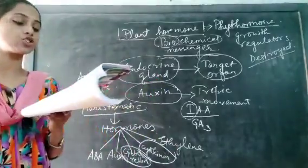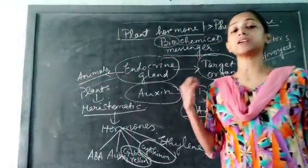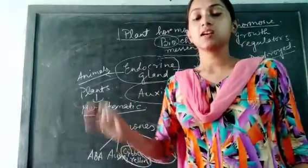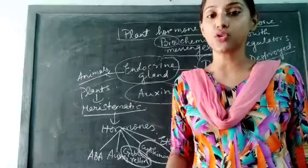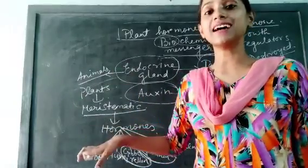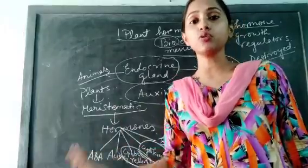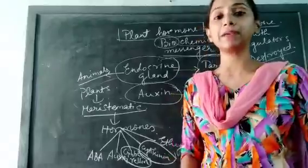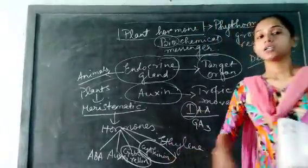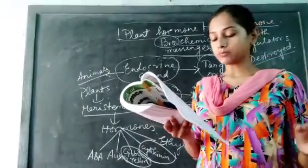Now, the role or function. First function is that apical dominance. So what is apical dominance? That means the growth of the apical bud inhibits the growth of the lateral bud. As the apical bud is growing, so the growth of the lateral bud is getting dominated or inhibited. So who is dominating over here? Apical part. That is why it is termed as apical dominance and it is primarily influenced by auxin.